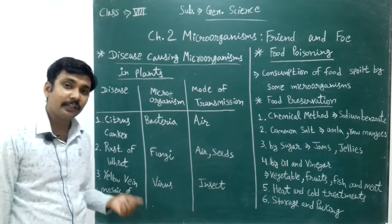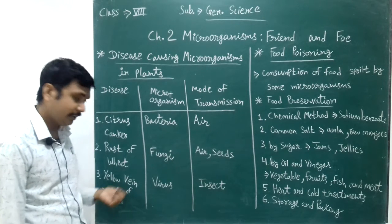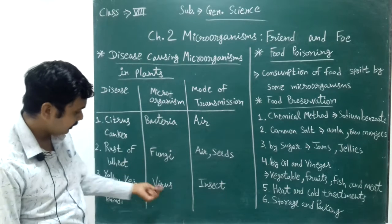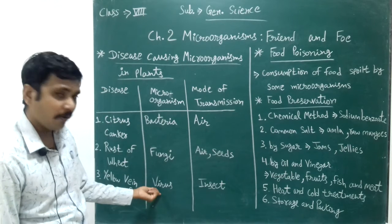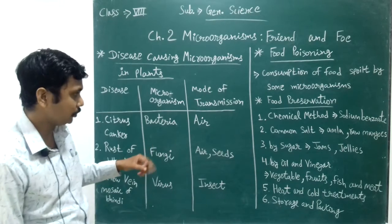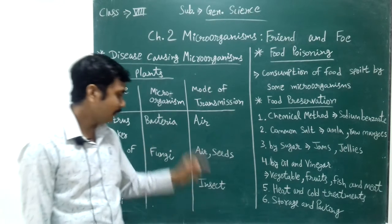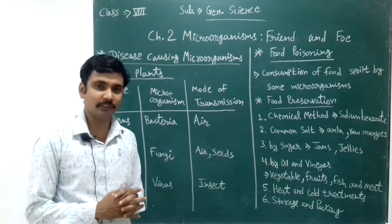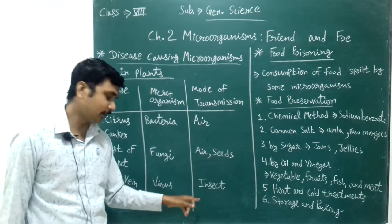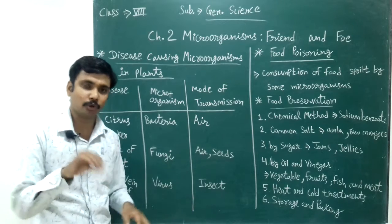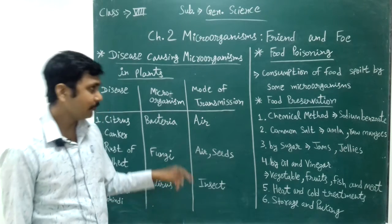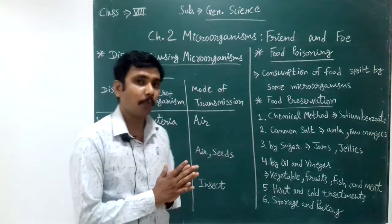Number three is yellow vein mosaic of bhindi. This disease is caused by viruses, and it is transmitted by insects. This disease is insect-borne. Now let's talk about food poisoning.